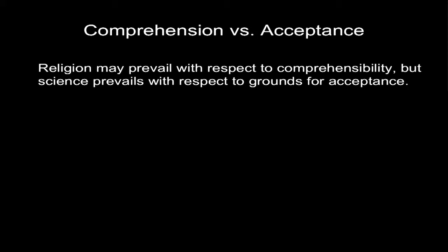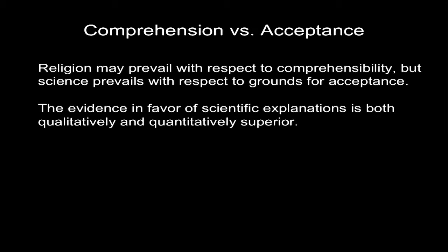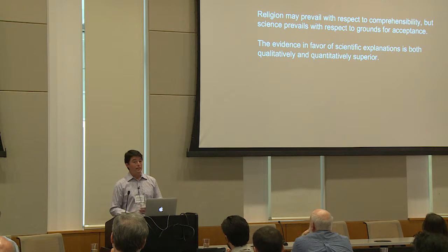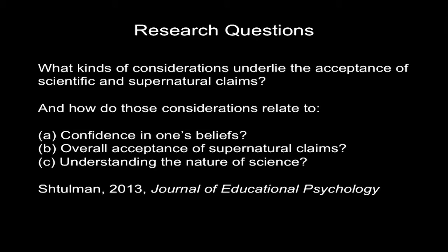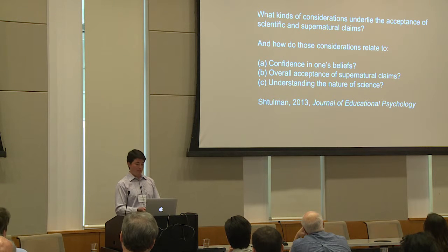Religion seems to have the upper hand when it comes to the comprehensibility of the explanations on offer, but science certainly has the upper hand when it comes to grounds for acceptance — the evidence. The evidence in favor of scientific explanations is far superior to that in favor of supernatural explanations, both from a qualitative and a quantitative point of view. What I'm going to focus on for the rest of the talk is whether or not the average person recognizes this fact. We wanted to know what kinds of considerations underlie the acceptance of scientific and supernatural claims, and how those considerations relate to confidence in beliefs, general acceptance of scientific claims, and understanding of the nature of science as a method of inquiry.